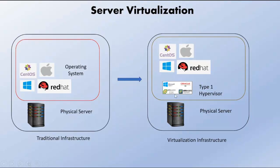Desktop virtualization is similar to server virtualization. In desktop virtualization, what we do is virtualize a particular operating system that will run on a Type 1 hypervisor. Previously, in large companies, employees ran their code on a physical laptop with one operating system installed. In today's modern world, companies run your operating system on a hypervisor infrastructure. VDI is an example of desktop virtualization, where your operating system runs as a virtual machine on a Type 1 hypervisor.